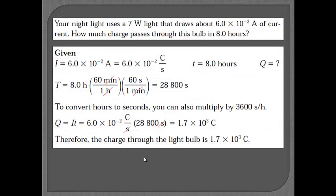Here's just a little example. You can write it in your notes if you want. We'll be doing more of these in class. It says that there's a night light that uses 7 watts of light that draws 6 times 10 to the minus 2 amps of current, and it's asking you how much charge passes through this light bulb in 8 hours. You can see the calculation here, but be careful because you had to convert that 8 hours into seconds before you can use it in the formula.